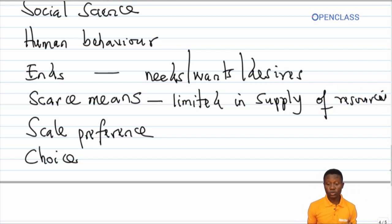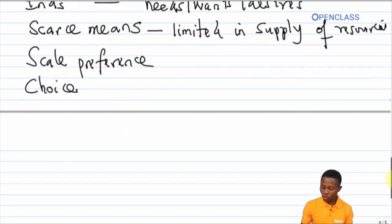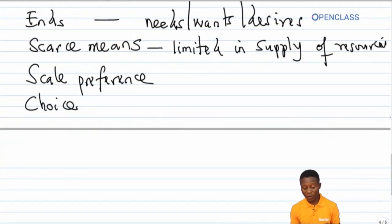When you're faced with a situation where you have so many needs and the available resources are limited, there will be a need for you to prioritize. You need to list your needs in the order of importance, and that list is referred to as a scale of preference. When you arrange your needs, the most pressing needs should come first while the least important ones should be at the tail end.